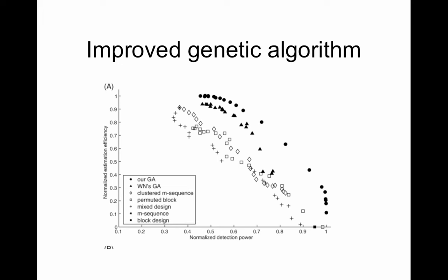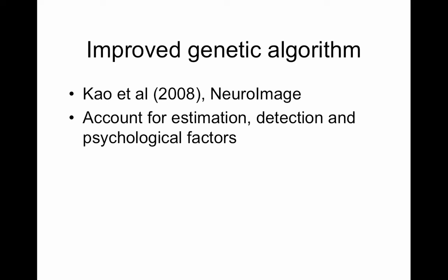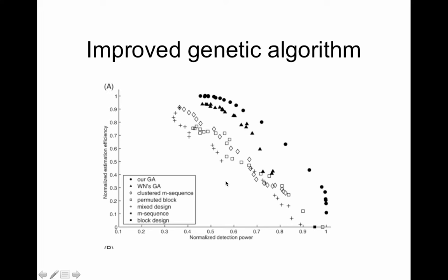There's a lot going on here, I'll just step you through it. They improved upon the genetic algorithm that I just showed you. That's Wager and Nichols. Tor Wager and Tom Nichols did that, that's their genetic algorithm and theirs is improved. I forget the specifics but they basically tweaked it and put these other improvements.